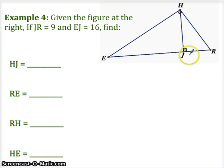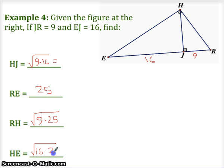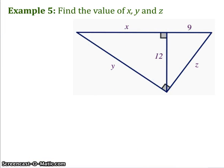Here we go. JR is 9, let's just fill these in. EJ is 16. Well, then if I took the geometric mean of those two things, I'd get HJ. So this is the geometric mean of 9 and 16. R to E, let's just add those up, that's 9 plus 16. RH is the geometric mean of 9 and the whole thing, 25. And HE is the geometric mean of 16 and 25. Can I do these in my head? That's actually 12. That's actually 15. That's actually 20. Check me with the calculator, but I think I got those.